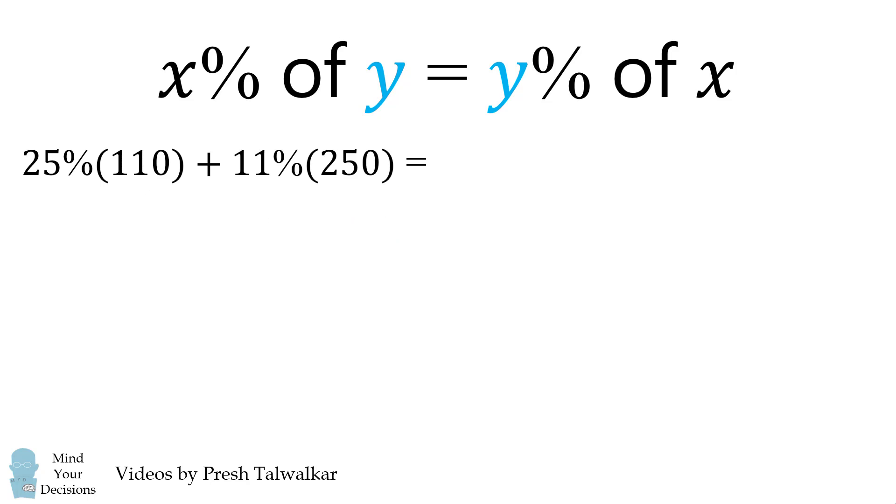Now this trick can also be useful in more complicated calculations. Let's say you needed to do 25% of 110 plus 11% of 250. At first it doesn't look like this trick will be very useful. But what you can do is factor 250 into 25 and 10.